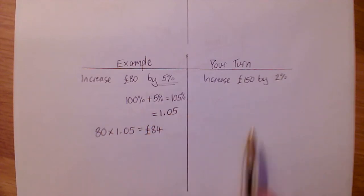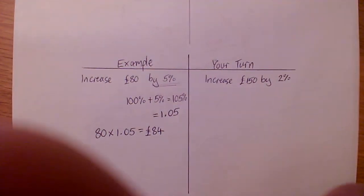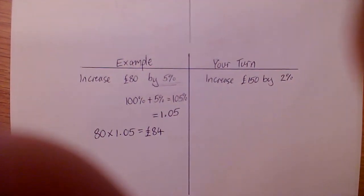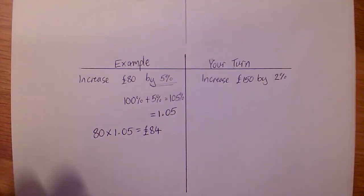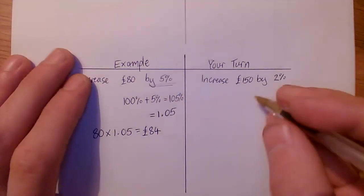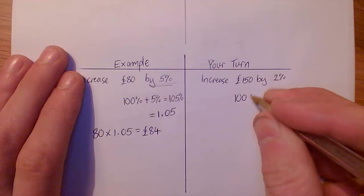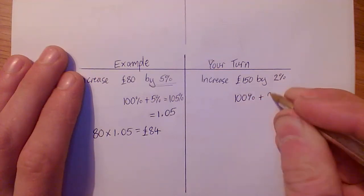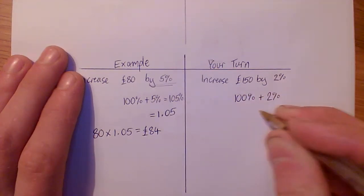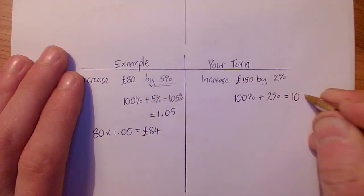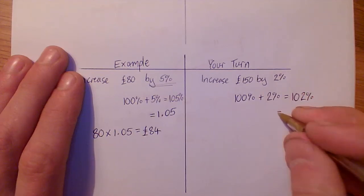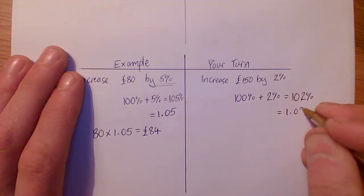Again, pause the video, have a go, and I'll run through this one in just a moment. Okay, hopefully you've had a go with that. So here we have 100% and we're adding on 2%, which should give you 102% or 1.02.